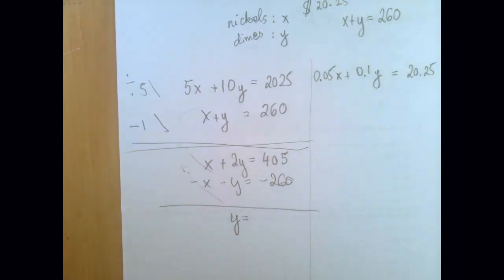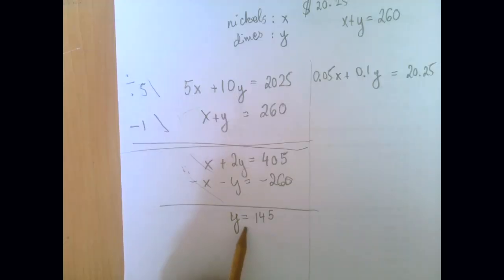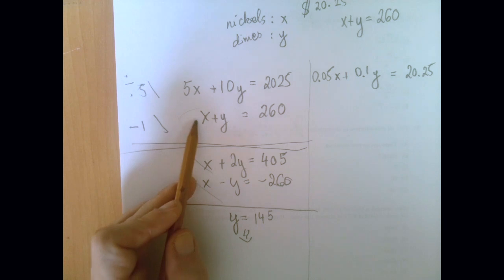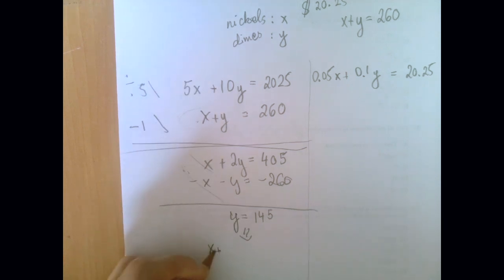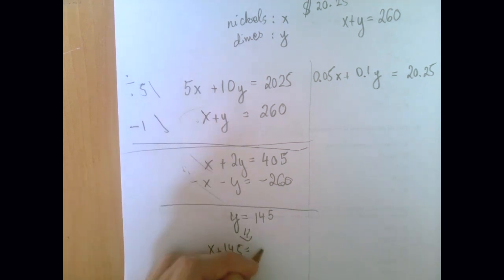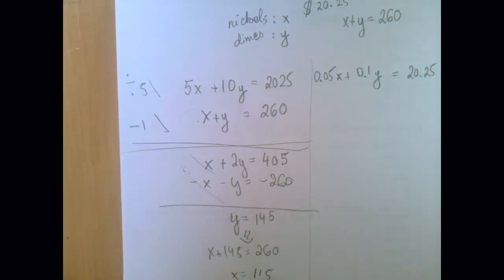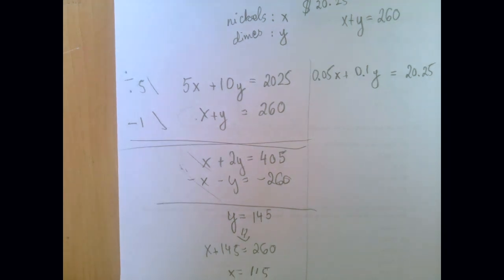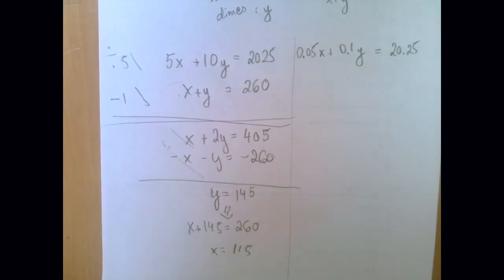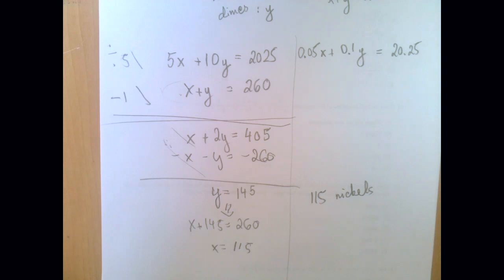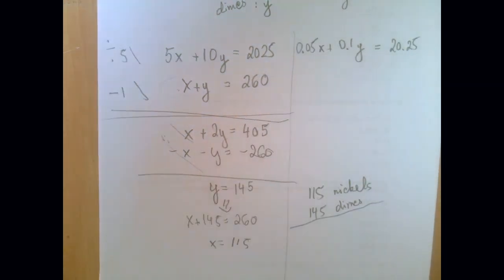and 405 minus 260 is 145. Then going back to the first equation, x plus 145 equals 260 means that x is 115. So this means that we think we have 115 nickels and 145 dimes.